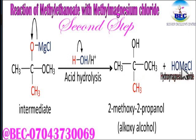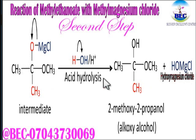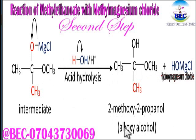The OH that is negatively charged will be attached to MgCl that is positively charged, leading to the formation of HOMgCl, which we call hydroxymagnesium chloride. Every other component is repeated — the CH3 here, the CH3 here, and the OCH3 here — and we call this product 2-methoxy-2-propanol; it's actually an alkoxy alcohol. That is how Grignard reagents react with esters. Do well to subscribe — thanks for watching.